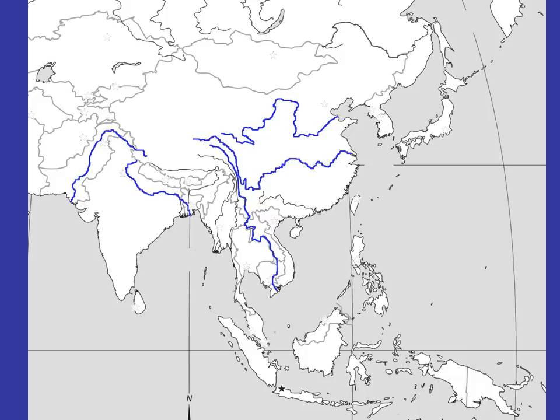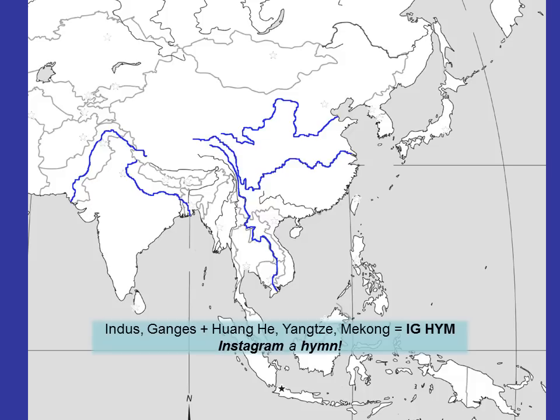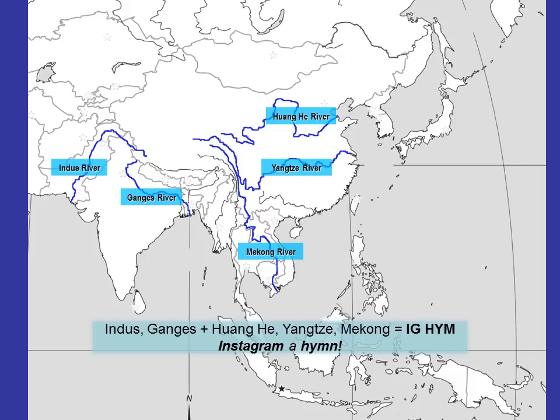We've got two rivers that are entirely enclosed in China: the Huanghe River and the Yangtze River. We also have the Mekong River, which starts in China but travels into Southeast Asia — going through Vietnam, Laos, Cambodia, and Thailand. Moving over to the west, we find the Ganges River, a very important river in India. Near India, we also find the Indus River. The name is connected — Indus, India — for a reason.